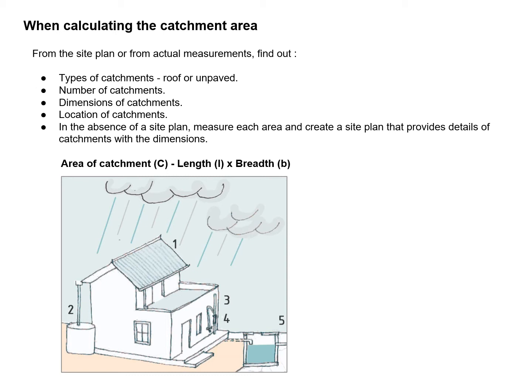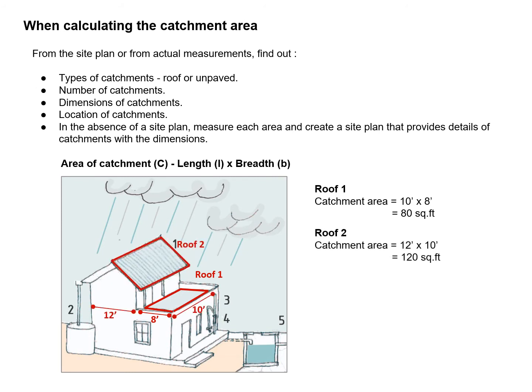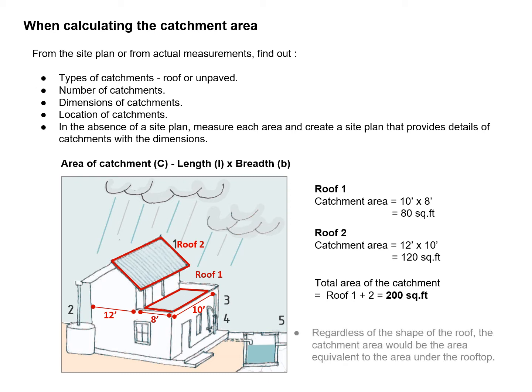In this small example, there is Roof One, which is a flat surface with an area of 10 by 8, which is 80 square feet. There is Roof Two, which is a sloping roof with an area of 12 by 10, equal to 120 square feet. When we add both, the total area comes to 200 square feet. Note that regardless of the shape of the roof — whether sloping or flat — the catchment area is equivalent to the area under the rooftop.